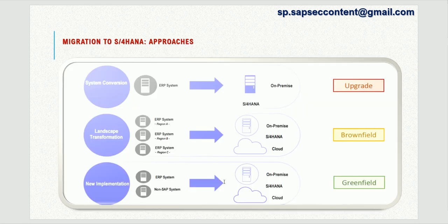From an approach standpoint, you basically have three approaches generally speaking. The first is a straight upgrade — you upgrade your ERP system to S4HANA without any process changes and without adding any new functionalities to your environment.